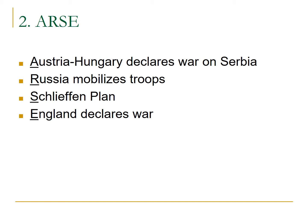A colleague came up with the ARS timeline: Austria-Hungary declares war on Serbia, then Russia mobilizes their troops, then the Schlieffen Plan is put into place by the Germans, and then England declares war — with all of the other nations falling into place as well.